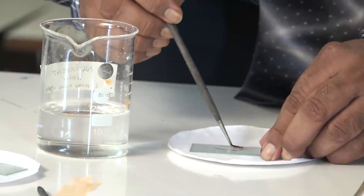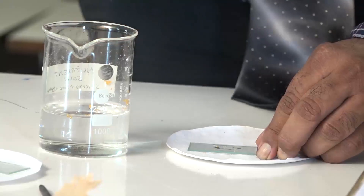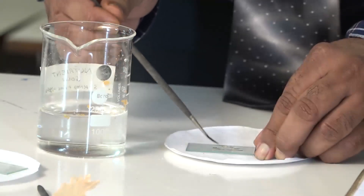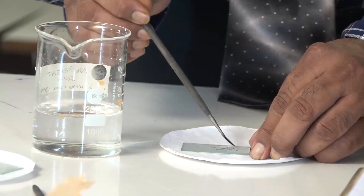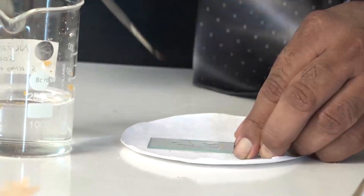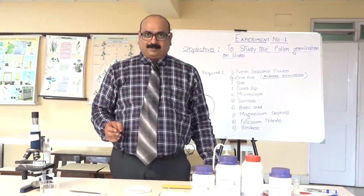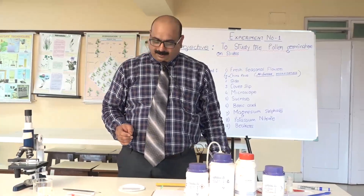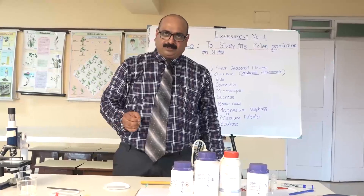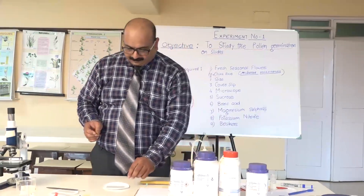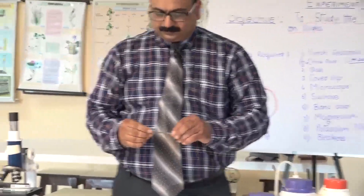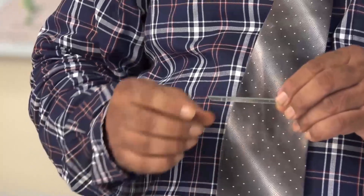Put the sucrose solution onto the pollen grain. This solution has almost the same composition as what the stigma secretes — that is a sugar-boron-inositol complex, which is what the stigma secretes and from where the pollen tube emerges through the germinal pore. Wait for five minutes.